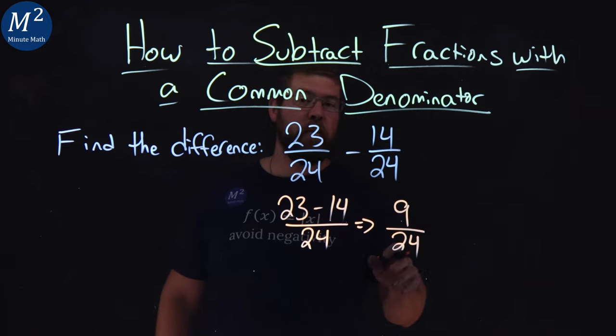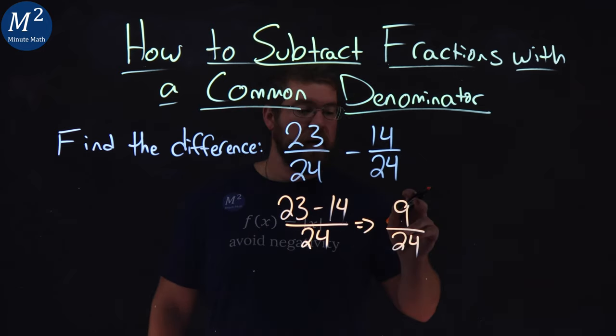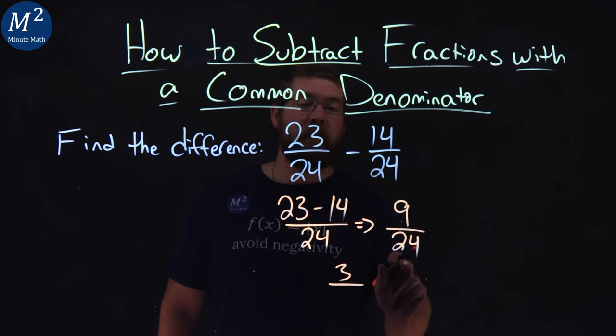Now, 9 and 24 are both divisible by 3. 9 divided by 3 is 3, and 24 divided by 3 is 8.